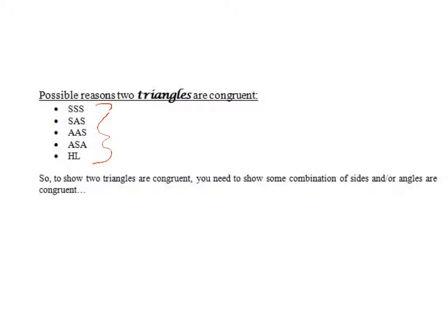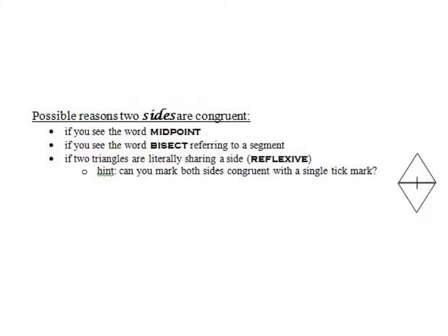In our proofs, because we're going to be showing two triangles are congruent and using one of these postulates, we may have to show that some of the sides or angles between the two triangles are congruent. I have some tips on things to look for in a picture. You'll have a picture and some given information, but most likely you're going to have to add some information based on observations about the picture or the given information.